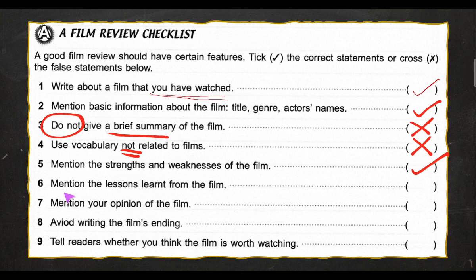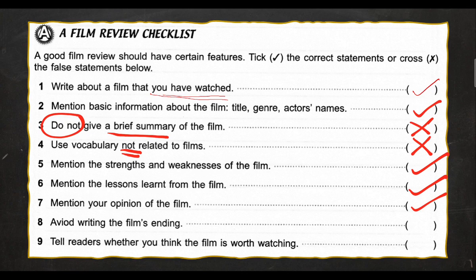Number six: mention the lessons learned from the film. Is this compulsory? It is not compulsory but it is advisable to have it in your essay. So that should be one of the points — 'I would recommend you to watch this movie because I learned a lot from it,' and then you can mention what lesson you learned from the movie or from the character itself. Number seven: mention your opinion of the film. Of course, this is actually the basic thing — a review is an opinion.